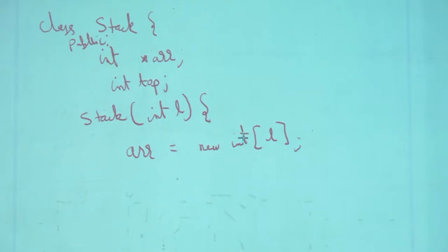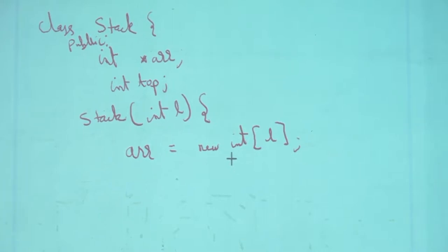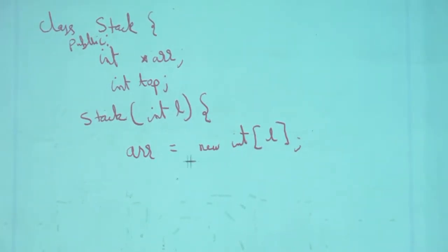And notionally I will say top = -1, because currently there is no element in the stack. If there was no element, top points to nowhere — minus one is used conventionally to indicate the stack is empty. Top keeps track of where I will pop the element from.